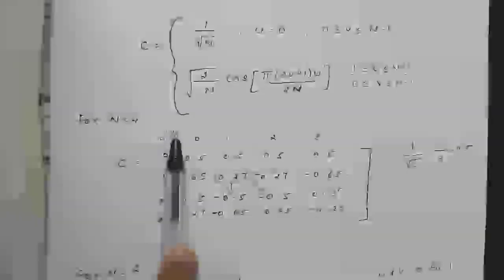For N = 4, the C matrix has U represented in one direction and V in the other. Both U and V vary from 0 to N−1, so for N = 4 they each vary from 0 to 3. When U = 0 and V varies from 0 to N−1, we use the value 1/√N. With N = 4, that gives 1/√4 = 1/2 = 0.5, so the first row is all 0.5.